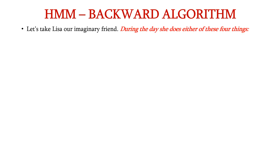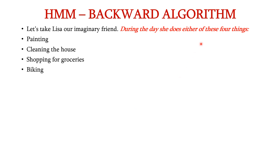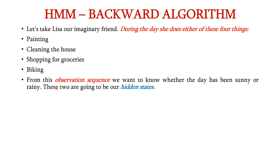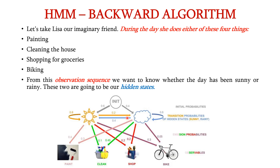In the example, Lissar does either of these four things in a day: painting, cleaning, shopping, or biking. These are called observed sequences. From this observation sequence, we want to know whether the day has been sunny or rainy. These two states are called hidden states. We have the hidden states — sunny and rainy — and the observable states, along with their respective transition and emission properties.